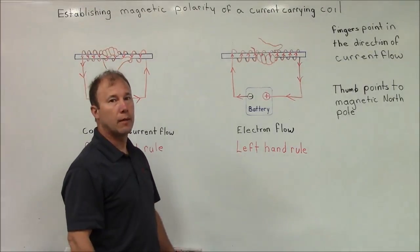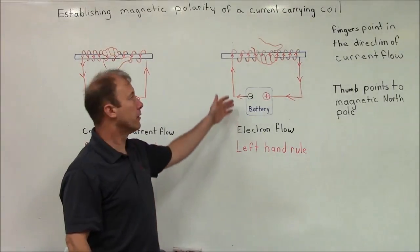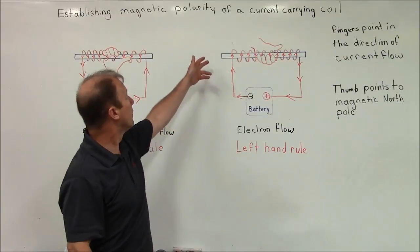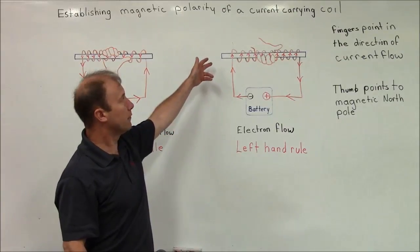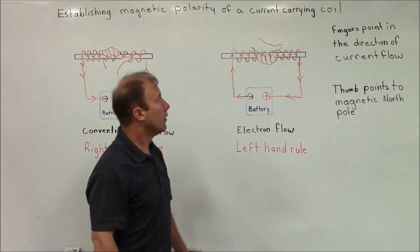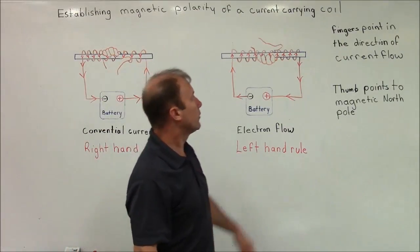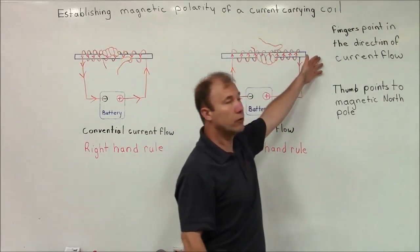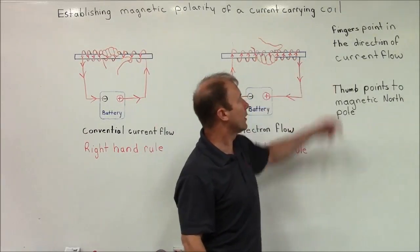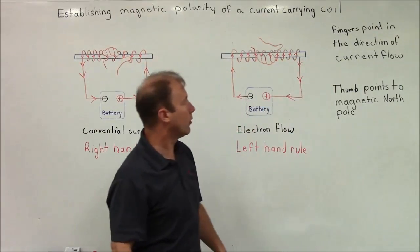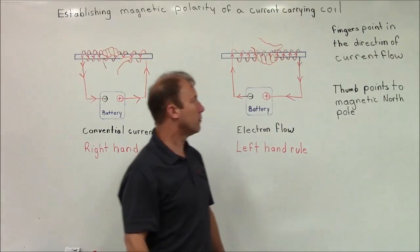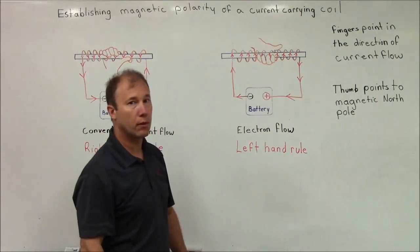Now that we've established the direction of current flow, we can establish the polarity of the current-carrying coil. To do this we use two tips: the fingers point in the direction of the current flow, and the thumb points to the magnetic north pole.